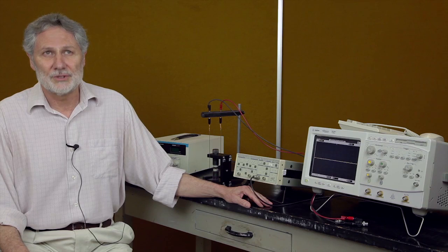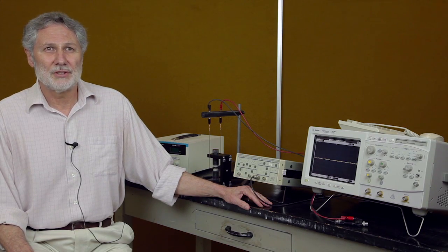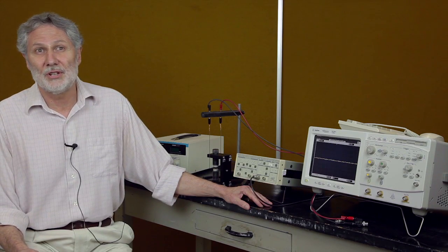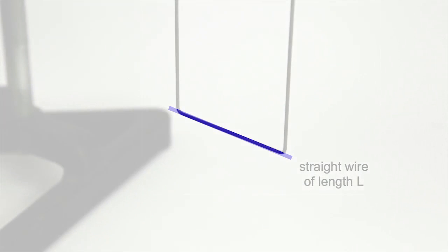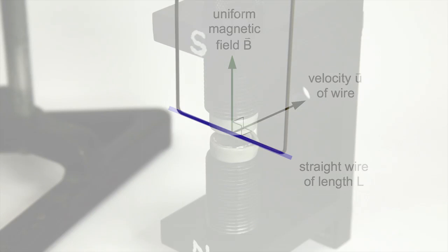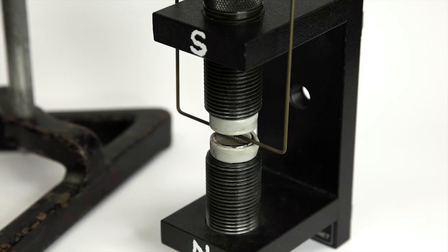Many physical phenomena are reversible — the technical name is reciprocal. Is the jumping wire demonstration reversible? That is, instead of putting a current through the wire to cause it to move in a magnetic field, what if we move the wire in the magnetic field? Will a current be generated? We consider the case where the wire is moving perpendicular to the magnetic field. There are moving charges in the wire, but they now experience a magnetic force that is along the wire. This generates a voltage across the wire. If the circuit is closed, there will be a current. The jumping wire demonstration should thus be reversible.